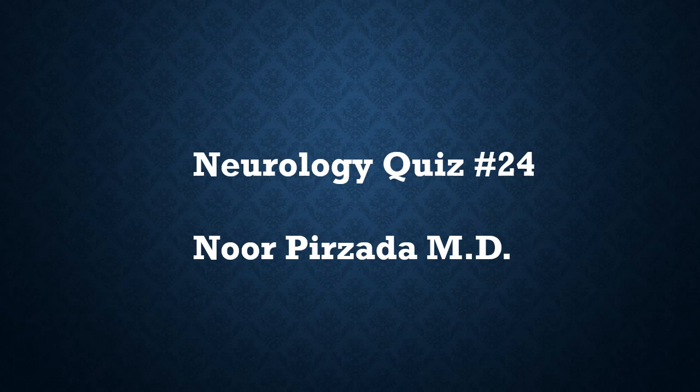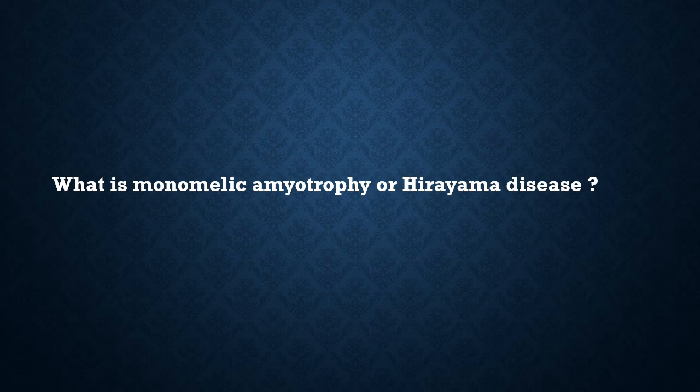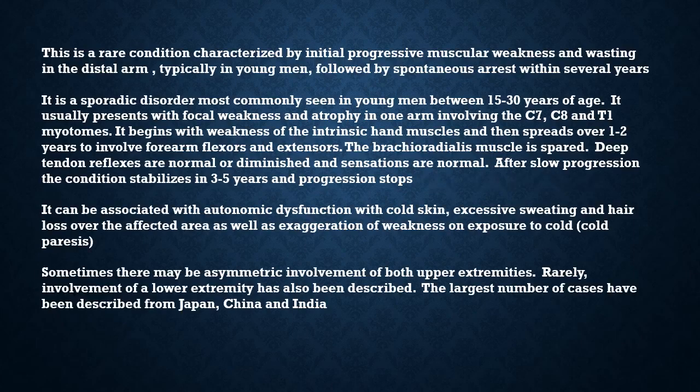Neurology quiz number 24: What is monomelic amyotrophy or Hirayama disease? This is a rare condition characterized by initial progressive muscular weakness and wasting in the distal arm, typically in young men, followed by spontaneous arrest within several years. It is a sporadic disorder most commonly seen in young men between 15 to 30 years of age.